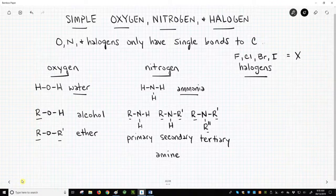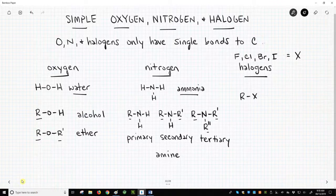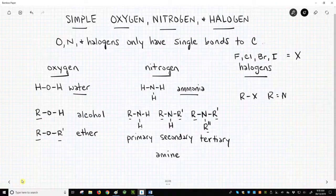If the R group is an alkyl group, like methyl or ethyl, it is called an alkyl halide.